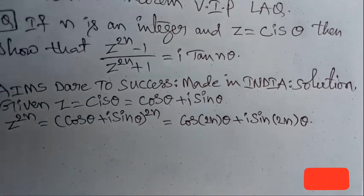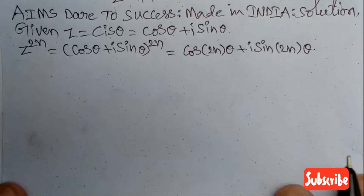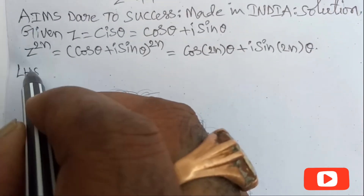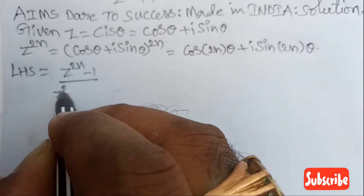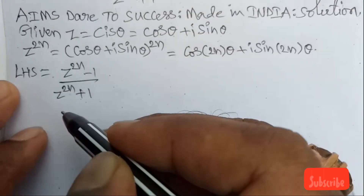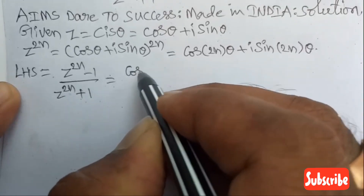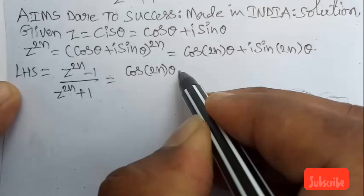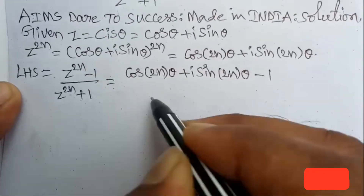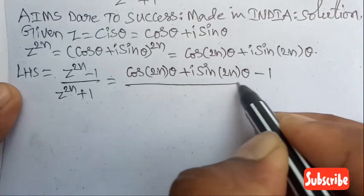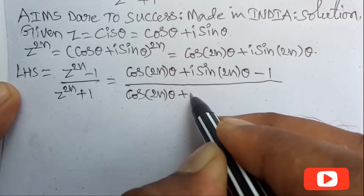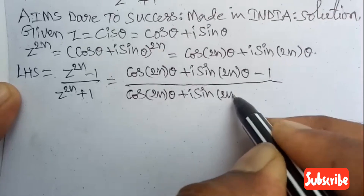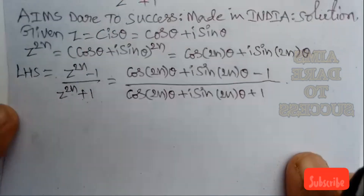After computing z power 2n, the LHS value is: z power 2n minus 1 divided by z power 2n plus 1. According to the previous step, z power 2n equals cos 2n theta plus i sine 2n theta. So the numerator becomes: cos 2n theta plus i sine 2n theta minus 1, and the denominator becomes: cos 2n theta plus i sine 2n theta plus 1.